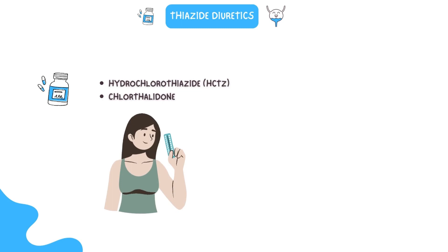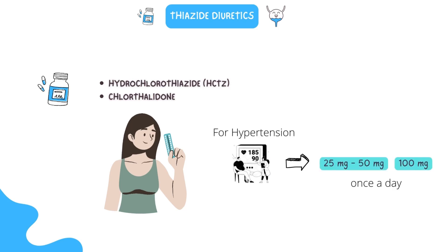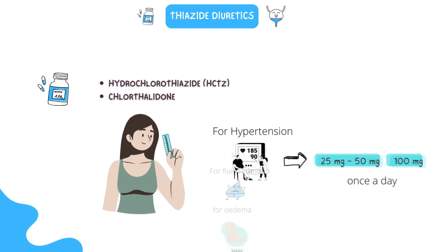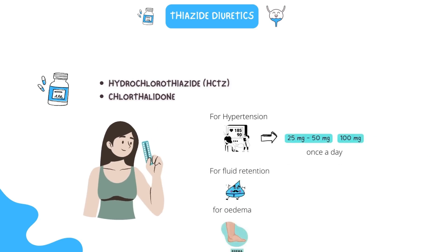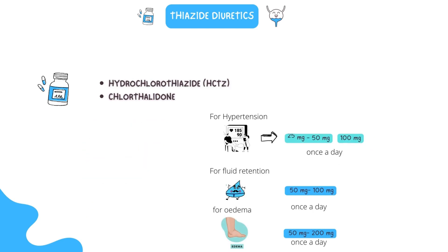Both medications often need to be taken at lower doses for the treatment of hypertension, starting at 25 mg per day and increasing to 50 mg or 100 mg respectively. Increasing the dosage should be done in accordance with the patient's specific therapeutic requirements. Dosing ranges for patients with fluid retention and edema are 50 mg to 100 mg and 50 mg to 200 mg respectively.